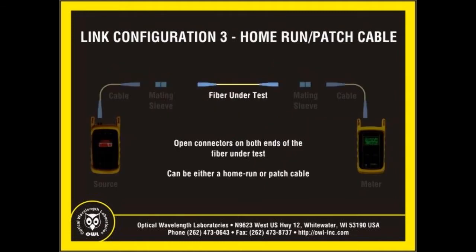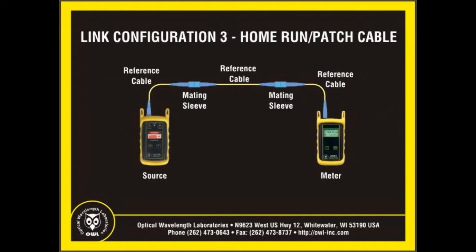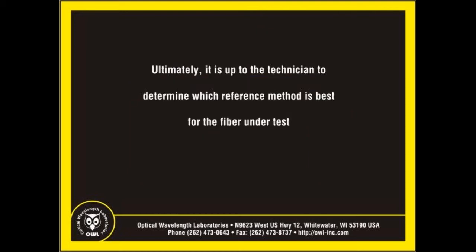The third link configuration does not include any mating sleeves in the link under test, so both ends of the fiber are just open connectors. This is typically referred to as a home-run cable, but a patch cable also fits this description. What remains from the test configuration is: the source, a cable, a mating sleeve, another mating sleeve, the second cable, and the meter. Simply add a third reference cable in between the mating sleeves to connect using the three-jumper method and set your reference. Once the reference has been set, remove the center patch cable and insert the home-run cable or patch cable under test. Ultimately, it is up to the technician to understand how to look at the link under test and choose the best reference method for the job at hand.